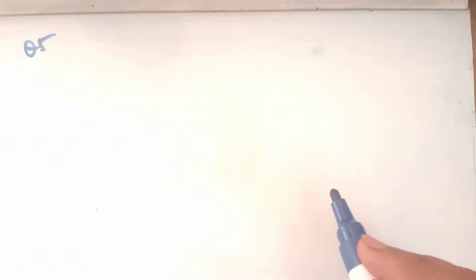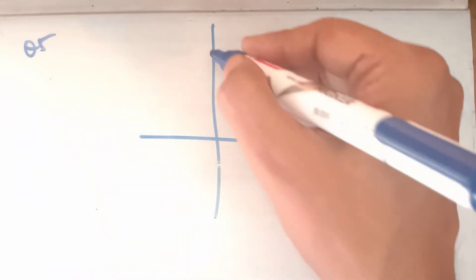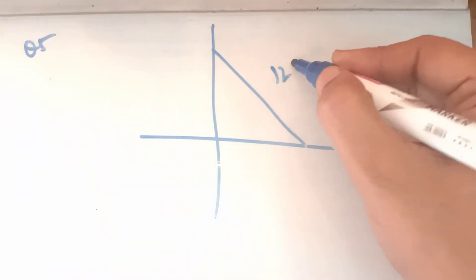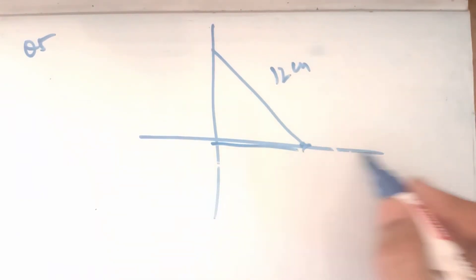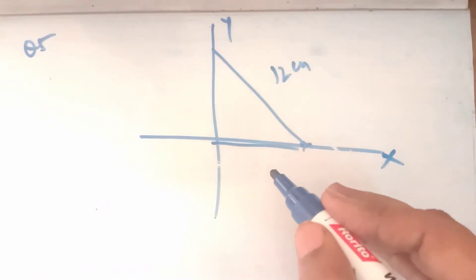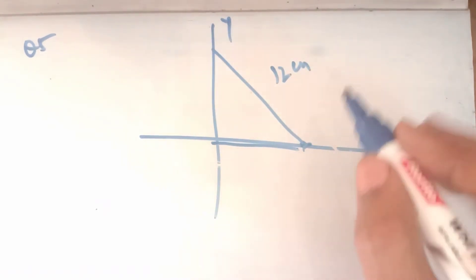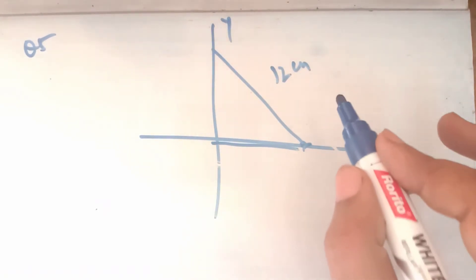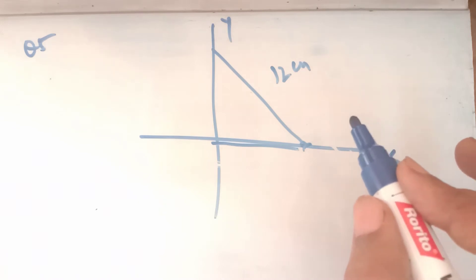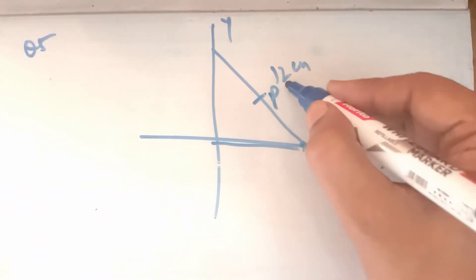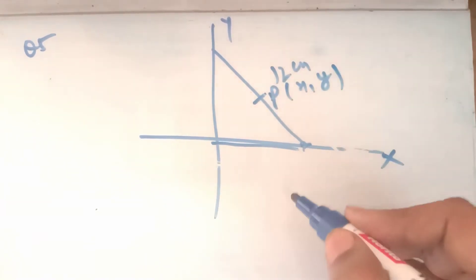Now in question number 5, a rod of length 12 cm moves with its ends always touching the coordinate axes — इस तरह से एक rod है, 12 cm लंबा, हमेशा X-axis और Y-axis को touch करता है। Determine the equation of the locus of point P, whose coordinates are (X, Y), which is 3 cm from the end in contact with the X-axis.